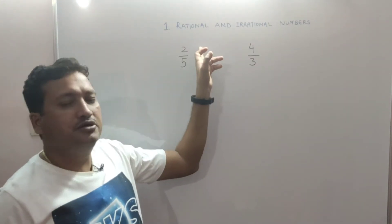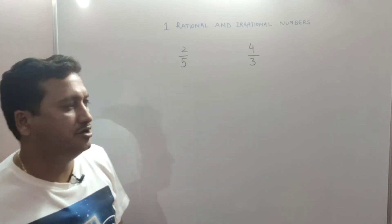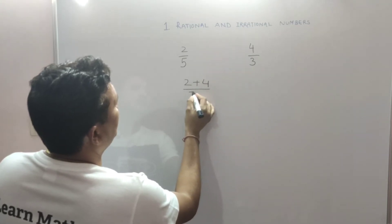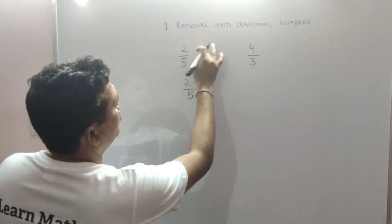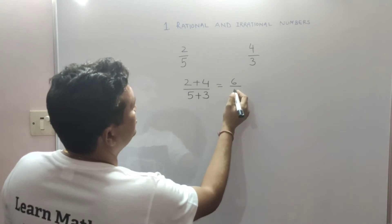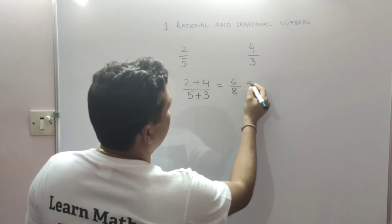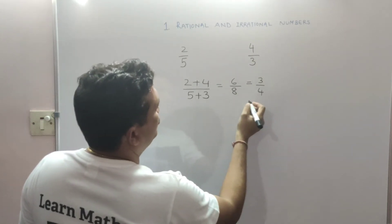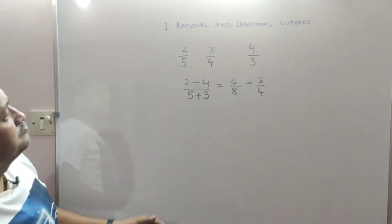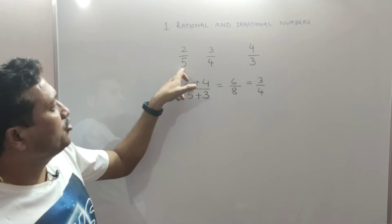In the second method, we add both numerators and both denominators of the given two rational numbers. That means 2 plus 4 upon 5 plus 3. So 2 plus 4 is 6 and 5 plus 3 is 8, giving 6 upon 8. The simplest form of 6 upon 8 is 3 upon 4. So 3 upon 4 is one rational number lying between 2 upon 5 and 4 upon 3. Now we can find a rational number between 2 upon 5 and 3 upon 4.